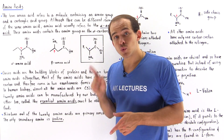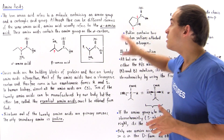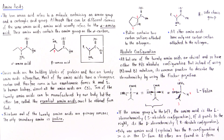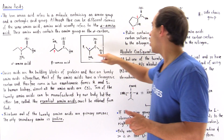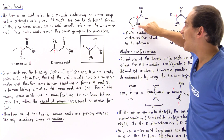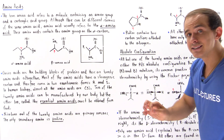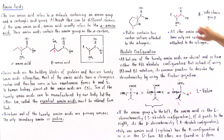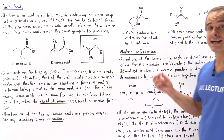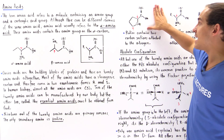Nineteen of the 20 amino acids are primary amines; only one is a secondary amine — proline. Notice that proline's side chain R group forms a five-membered cyclic ring. The nitrogen in proline is attached to two carbon groups, making it a secondary amine. All other amino acids have nitrogen attached to only one carbon group, making them primary amines. So only one amino acid is achiral — glycine — and only one is a secondary amine — proline.